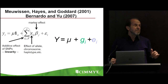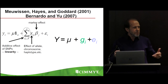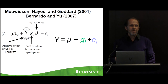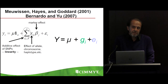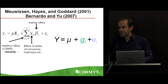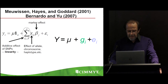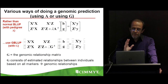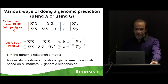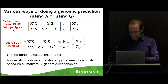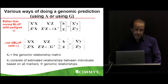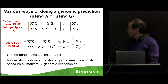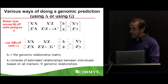You might ask: why use all markers? Some markers may not be related to anything. For grain yield you don't know which markers are relevant. There are various ways to do genomic prediction — you might use A or G, or both A and G. This is the standard mixed model equation for getting the BLUP using the A matrix — the additive relationship matrix. This is the mixed model equation using the G matrix. Or you can use both.